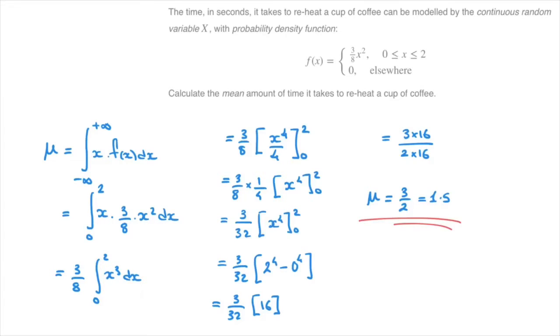And that's how to calculate the mean of a continuous random variable. Now this mean tells us what we could expect the average or mean value of the continuous random variable to be after a sufficiently large number of trials. So given this scenario, the scenario in which we're reheating a cup of coffee, what this tells us is that if we were to make a note of the time that it takes to reheat a cup of coffee a hundred times or a thousand times or even a million times, then the average of all the times that we'll have written down will tend towards 1.5 seconds. And that's what the mean tells us.